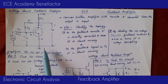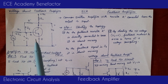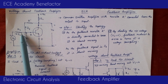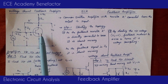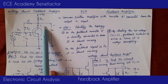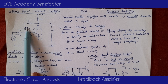This is a diagram of a voltage shunt feedback amplifier. The other name of the circuit is common emitter amplifier with resistor R'. So if you take out R', it is a common emitter amplifier because the output is taken at the collector terminal. So it is a common emitter amplifier with resistor R'.